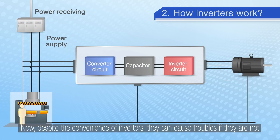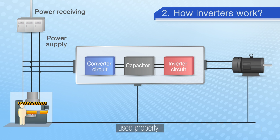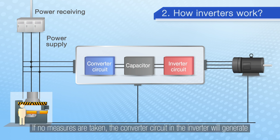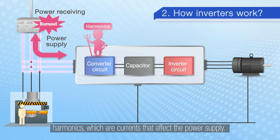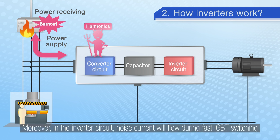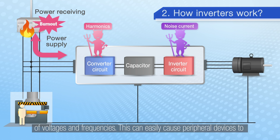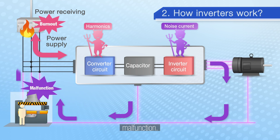Now, despite the convenience of inverters, they can cause trouble if they are not used properly. If no measures are taken, the converter circuit in the inverter will generate harmonics, which are currents that affect the power supply. Moreover, in the inverter circuit, noise current will flow during fast IGBT switching of voltages and frequencies, and this can easily cause peripheral devices to malfunction.